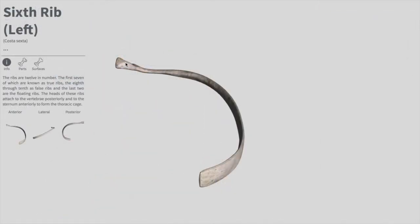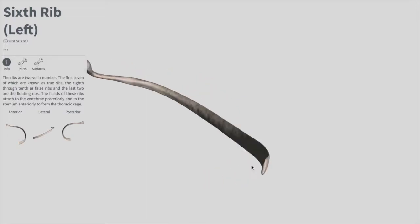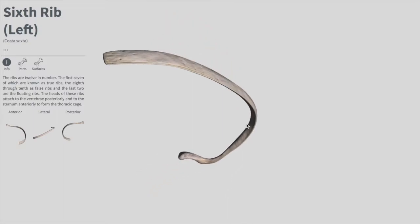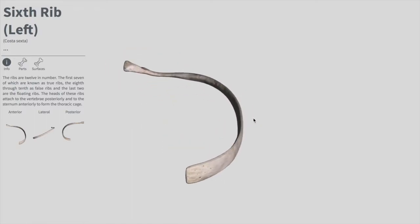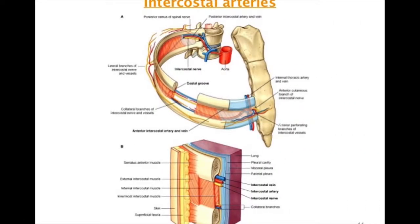Now let's talk about a typical rib, which is a long, twisted, and flat bone. You can see it's rounded and smooth on the superior border, and sharp and thin on the inferior border. The inferior border has a groove called the costal groove, in which the intercostal vessels and nerves are accommodated. I have a picture to explain how the costal groove looks.